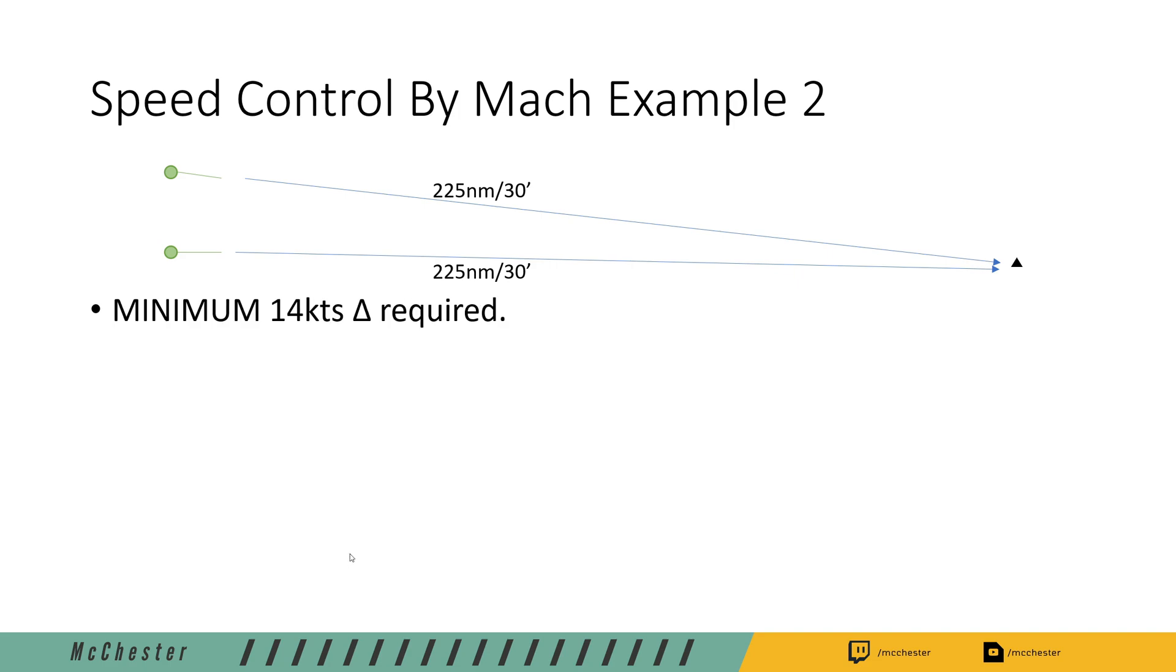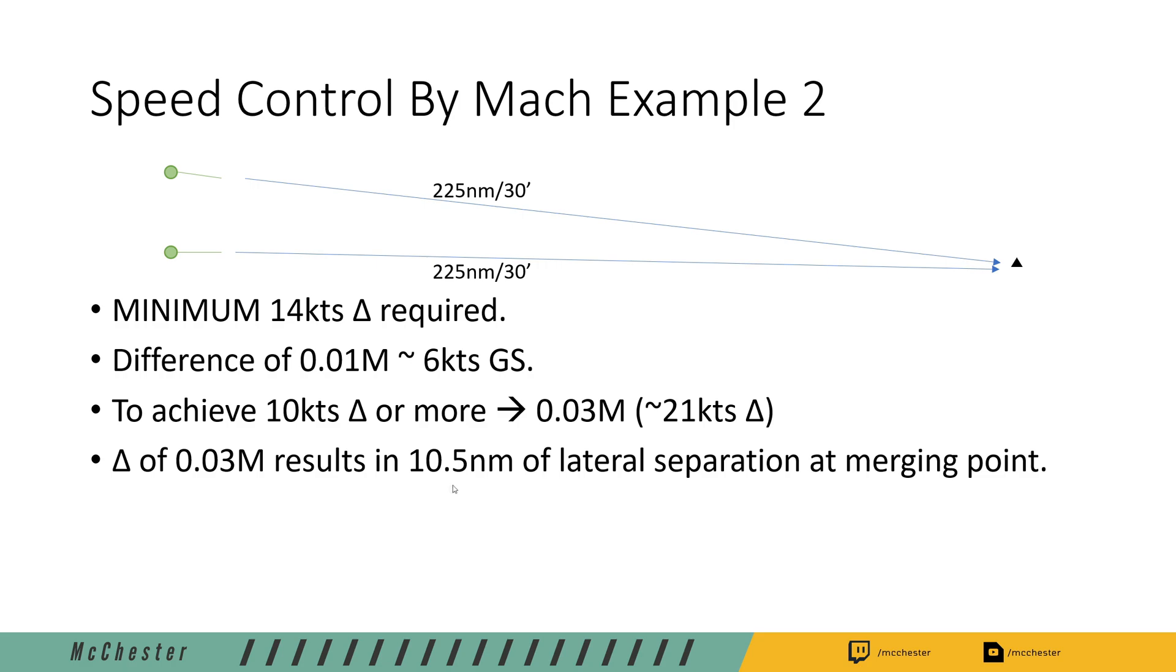Let's calculate this in Mach. We need 14 knots of ground speed difference and 0.01 Mach equals 6 knots of ground speed. So we cannot do this with 0.02 because this would only equal 12 knots of speed difference. We need to take the next bigger number, that's 0.03 which equals 21 knots ground speed delta. This is going to achieve 10.5 nautical miles in separation, significantly more than the 7 miles that we require but we are on the safe side.